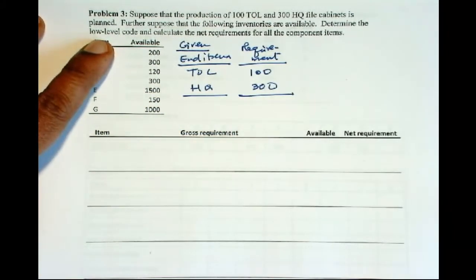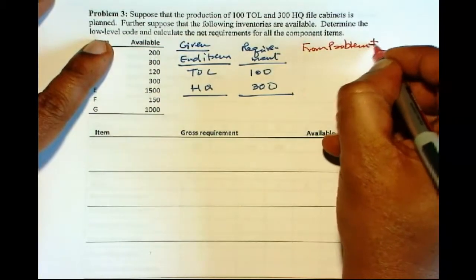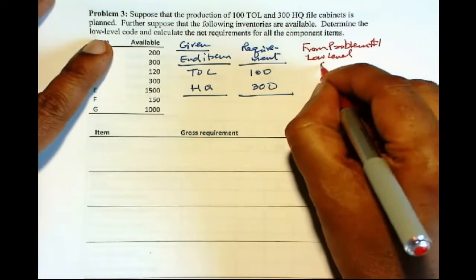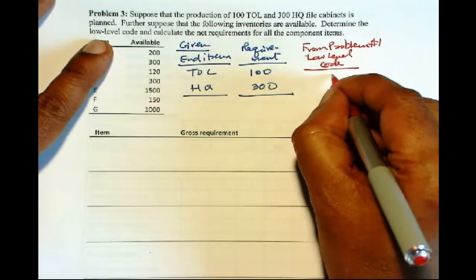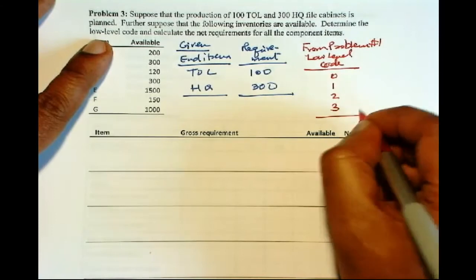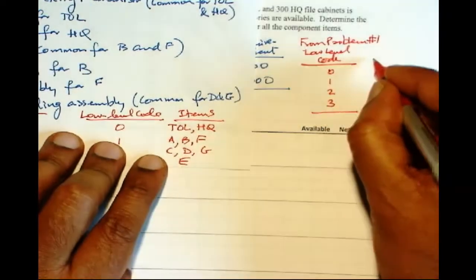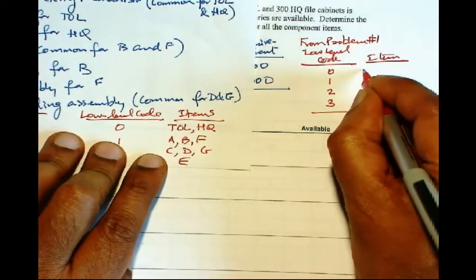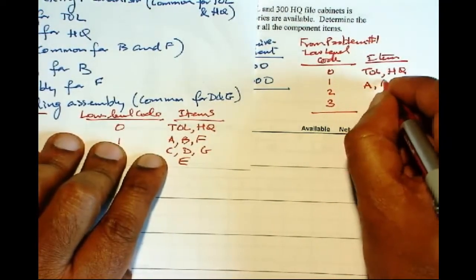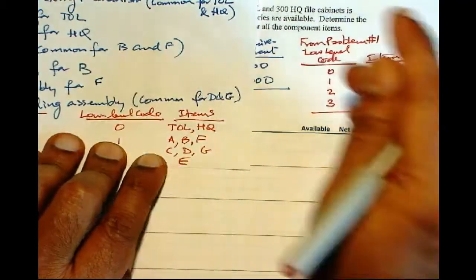And we also know from problem number one, we have low level code, 0, 1, 2, and 3. And we have that here, items TOL and HQ, AB and F, C, D and G, and E.